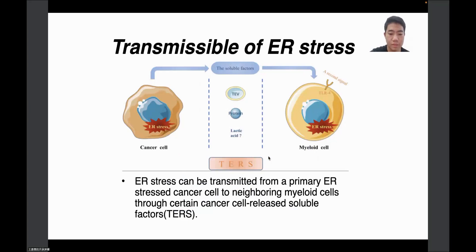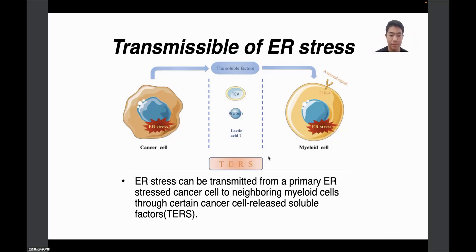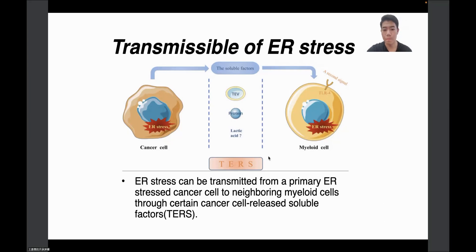I also want to talk about transmissible ER stress. ER stress can be transmitted from primary ER-stressed cancer cells to neighboring myeloid cells in the tumor microenvironment through certain cancer cell-released soluble factors, which may be exosomes/EVs, proteins, or even lactic acid. In addition, ER stress in recipient myeloid cells can be perpetuated by a second signal through TLR4, although the specific molecules still remain to be identified.